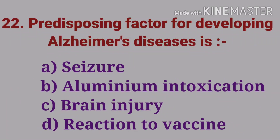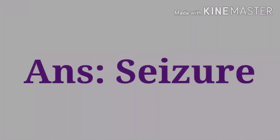Next question: predisposing factor for developing Alzheimer's disease — options are seizure, aluminium intoxication, brain injury, and reaction to vaccine. The answer is aluminium intoxication; seizure is listed as a predisposing factor.